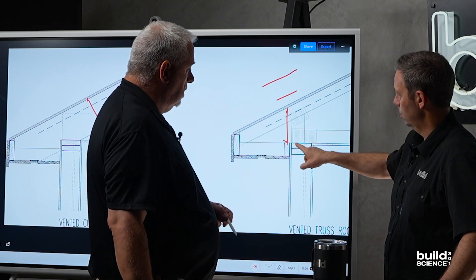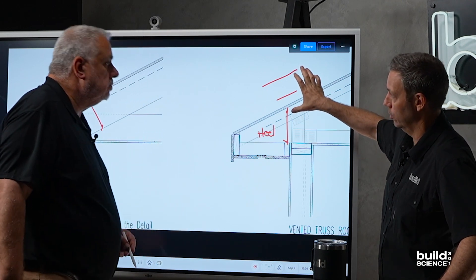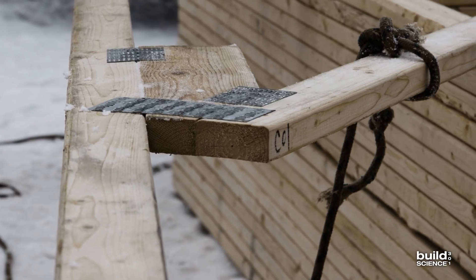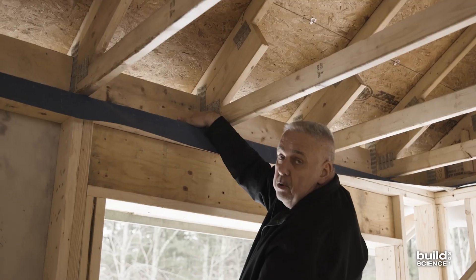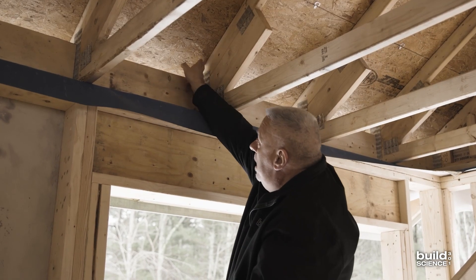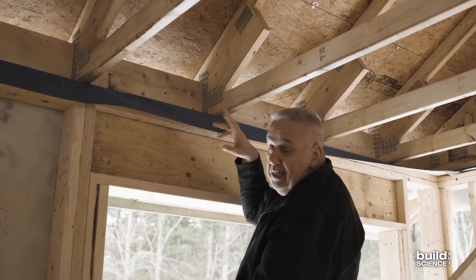Yeah, so this is the heel of the truss right here, and this 2x could get lengthened by the truss designer, and now we've got an energy heel or a raised heel truss. And that helps climate tune it to a much more colder climate. Yep, allows us to get more insulation above that double top plate.